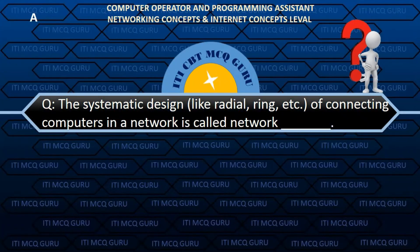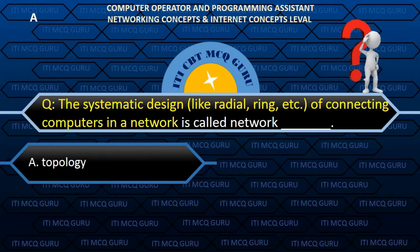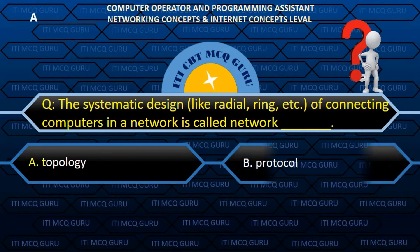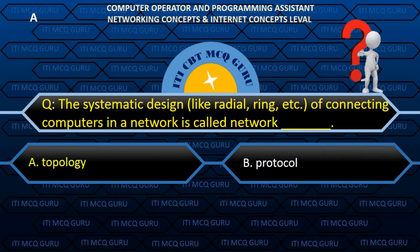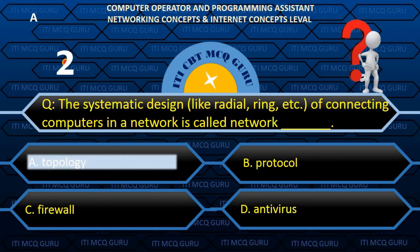The systematic design — like radial, ring, etc. — of connecting computers in a network is called: A. Topology.